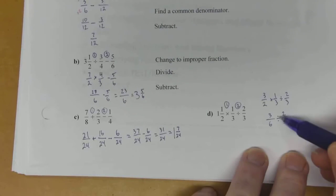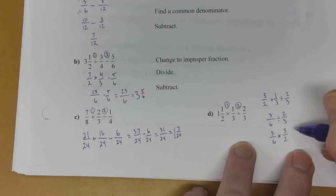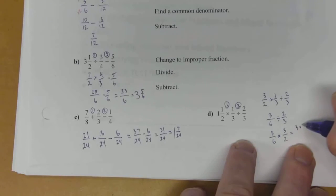And then I can bring down my division. So now to divide, I'm going to take the reciprocal and turn it into multiplies. So 3 over 6 times 3 over 2. That's the same as 3 times 3 over 6 times 2. Which is 9 over 12.